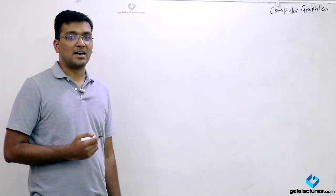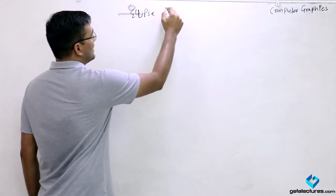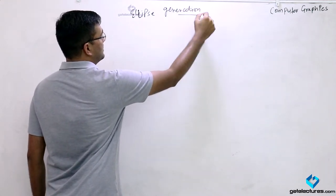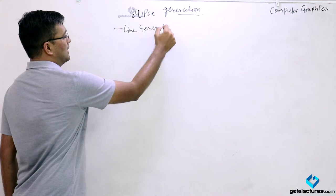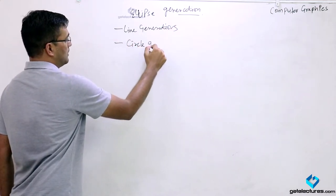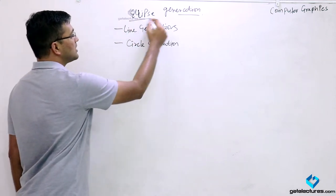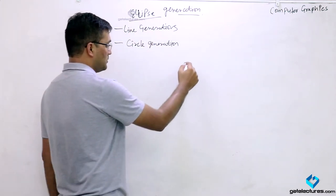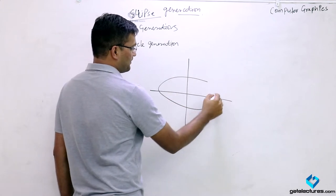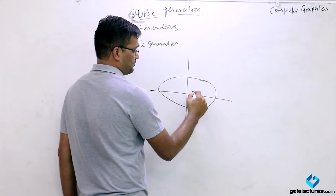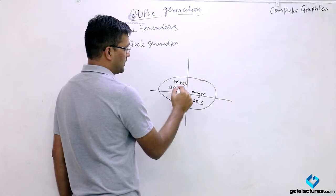Welcome back students. Today we will be continuing our discussion with ellipse generation. Previously we have already seen our algorithms for line generation and circle generation. In this class we will see how to generate an ellipse. As we know, an ellipse has a major axis and a minor axis.